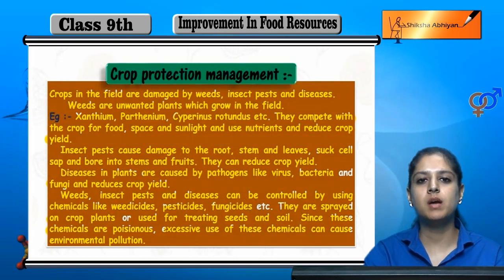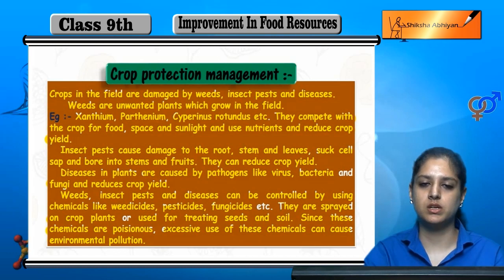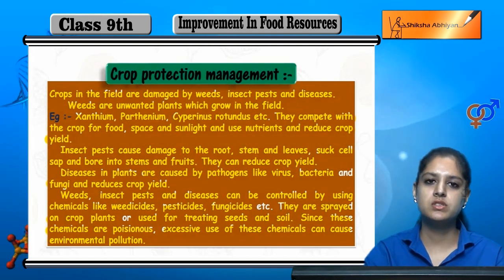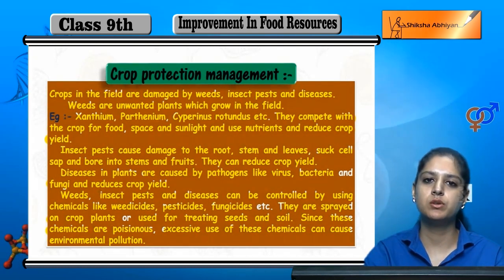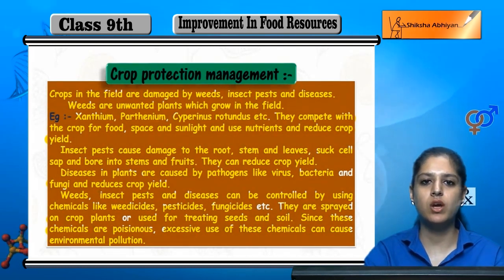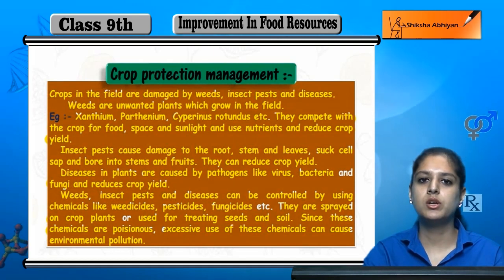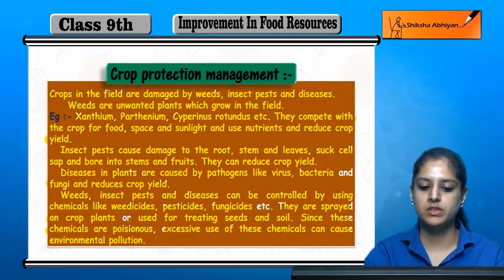Because all these chemicals are poisonous, we need to use a limited amount. If we use more, it can cause environmental pollution — soil becomes bad and water becomes bad.